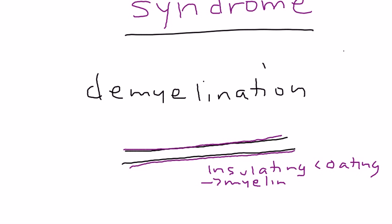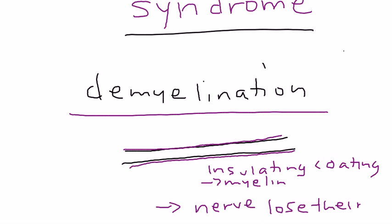That myelin is responsible or helps impulses go along these nerves more rapidly. Diseases that cause demyelination, where the myelin is being lost, can make the nerves lose their function, and that can result in a lot of problems.